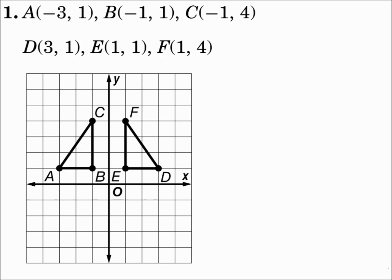For question one, we need to identify the type of transformation and then verify that it's a congruence transformation. The first triangle is ABC and the second triangle is DEF. It just flips over making a mirror image of itself, so it's a reflection.